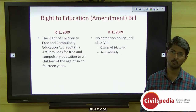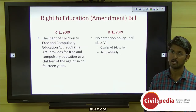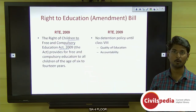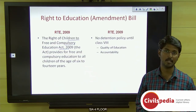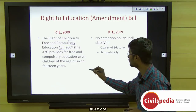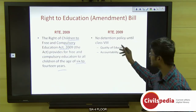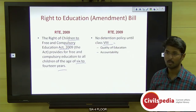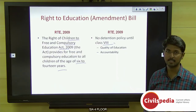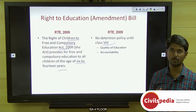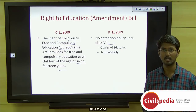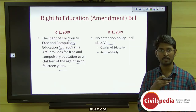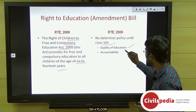Our next topic is the Amendment to the Right to Education Bill. The Right of Children to Free and Compulsory Education Act was passed in 2009, providing free and compulsory education to children between ages 6 and 14. One key provision is the no-detention policy until Class 8. However, a concern is that quality of education would deteriorate, as reports showed students in Class 5 unable to solve Class 3 math problems, and there was no accountability for students or teachers.